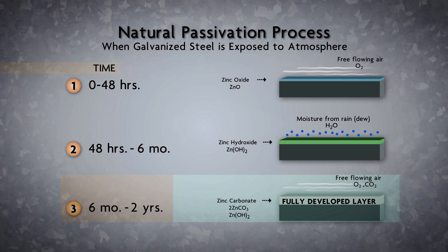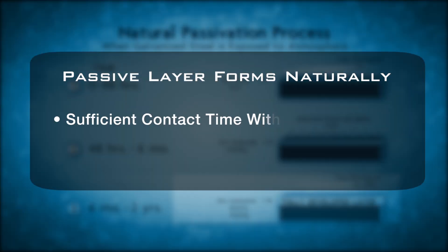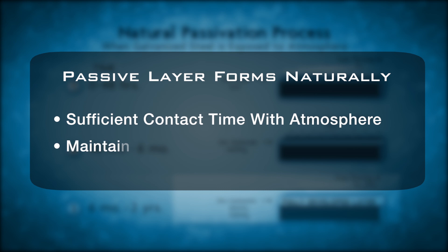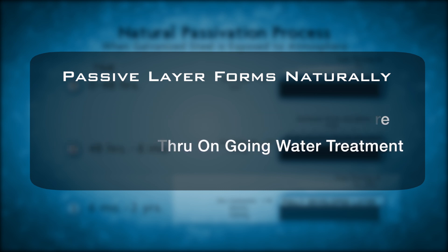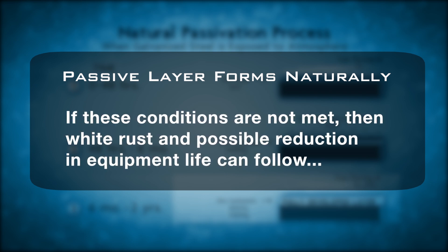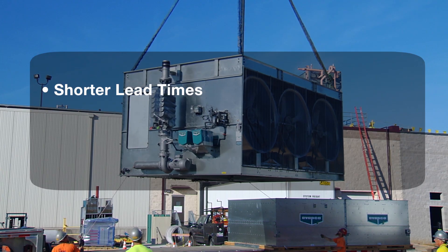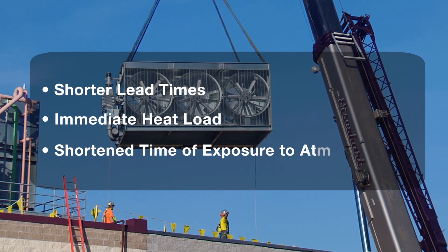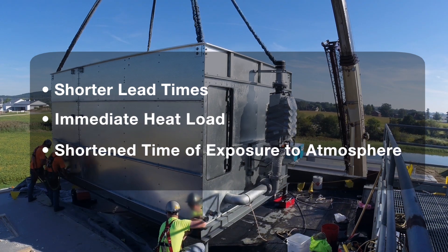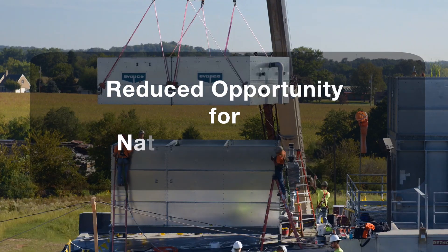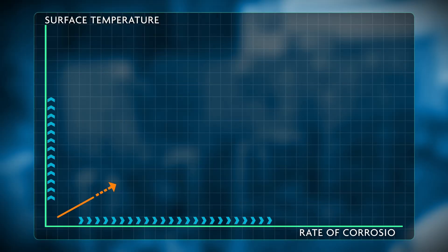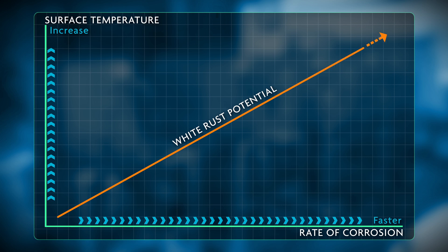So now we have established that white rust has become a problem for new galvanized steel in the evaporative cooling industry. To prevent it from causing serious damage, the equipment needs to be protected. Remember, this protective passive layer forms naturally when there is sufficient contact time with the atmosphere, and it also has to be maintained through ongoing water treatment. If one or both of those conditions aren't met, then white rust and possible reduction in equipment life can follow. In recent years, customer preferences for shorter lead times and their requirement for immediate heat load has shortened the time that new galvanized evaporative cooling equipment is exposed to the atmosphere prior to initial water circulation. This reduces the opportunity for natural passivation to occur. Higher temperatures increase the potential for white rust when new equipment is commissioned with immediate load.